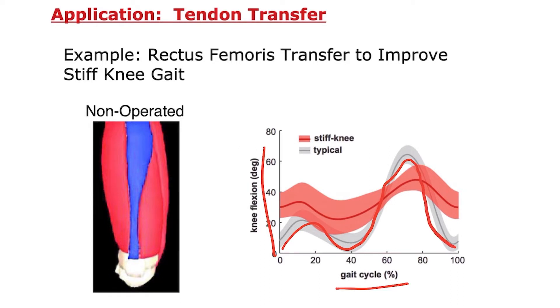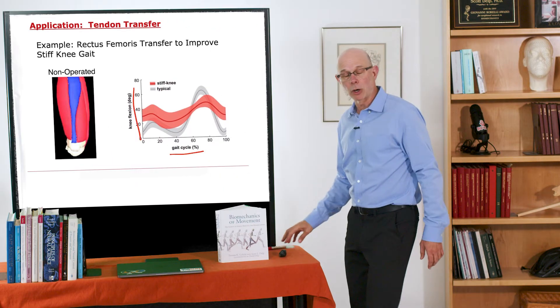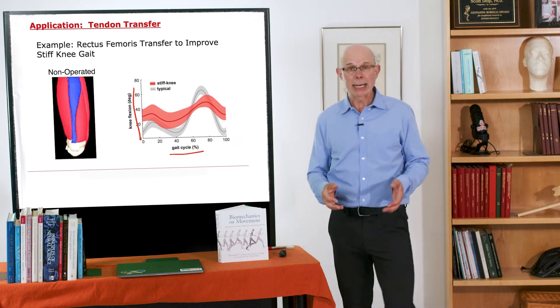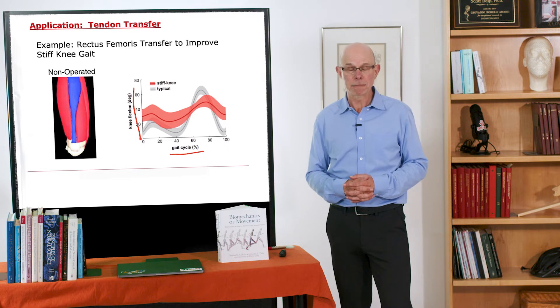So here's the knee flexion angle versus percentage of gait cycle. And here's normal. You flex your knee a little bit and then you flex your knee a lot during the swing phase of gait. In stiff knee gait usually you're a little bit crouched so you're flexing a little bit more. And then during the swing phase you don't flex much at all. And it's a problematic gait because it leads to tripping and falling. It's energetically inefficient.